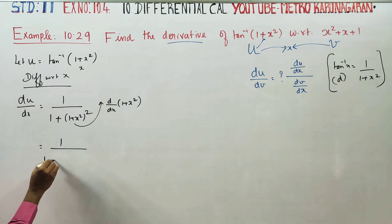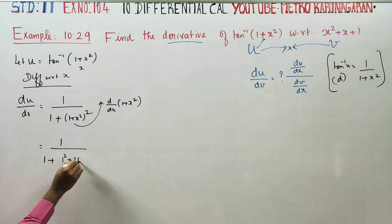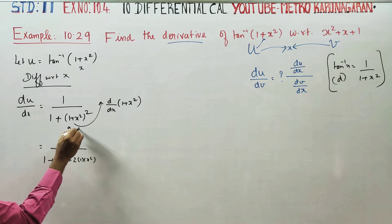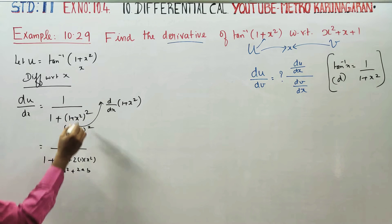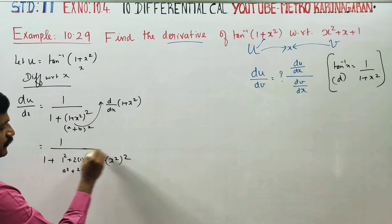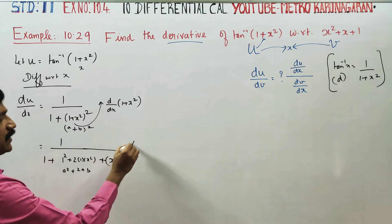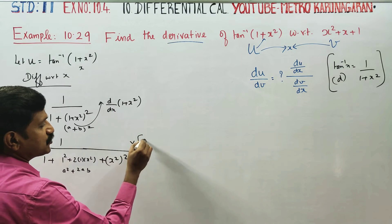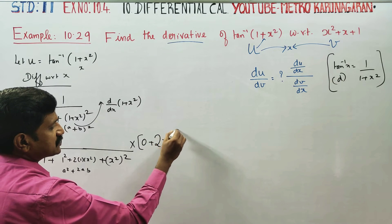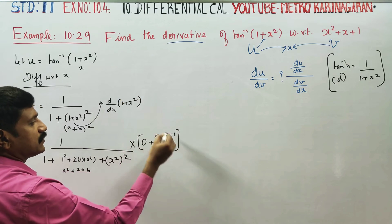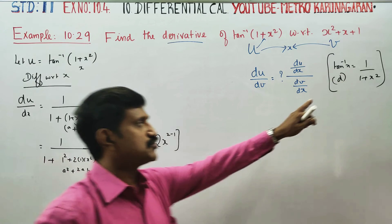Next, expand 1 plus x square whole squared using the formula a plus b whole square equals a square plus 2ab plus b square. Here a is 1 and b is x square, giving 1 plus 2x square plus x power 4. Then differentiate: constant gives 0, x square differentiates to 2x, and x power 4 differentiates with power brought to front.